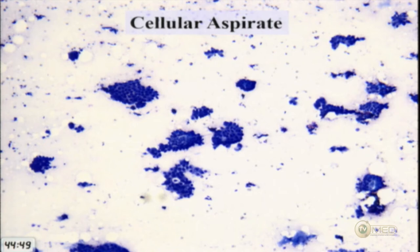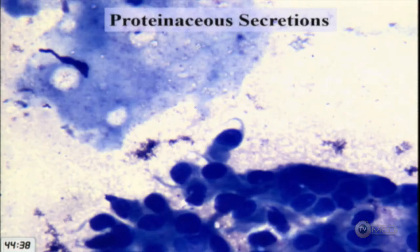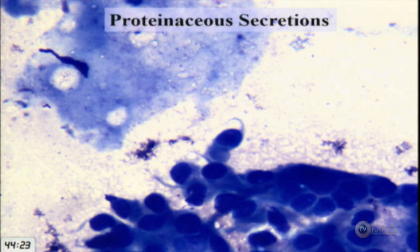The aspirate is fairly cellular, with cohesive groups of cells and scattered single cells in the background. There is also some proteinaceous secretory material in the background, and we can see little curly-Q tails on some of the cells — a strange finding we don't usually see in salivary gland tumors.